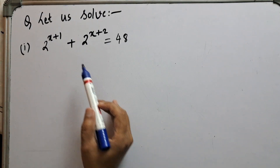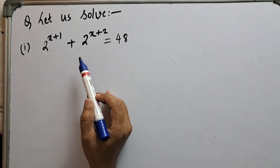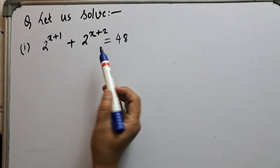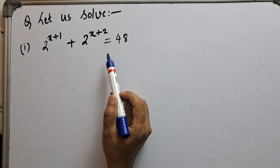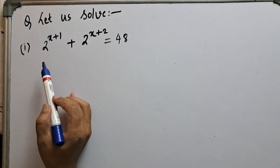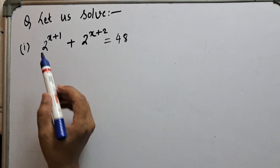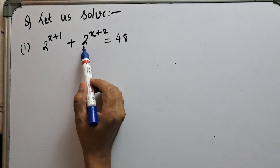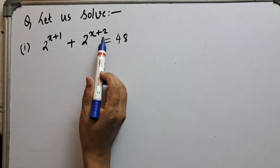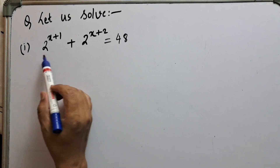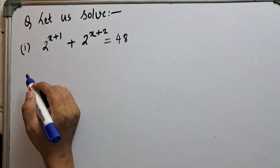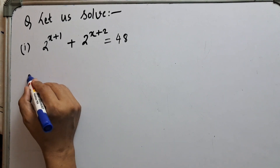Hello students, today we shall learn to solve equations based on powers. To understand this topic I have chosen three questions. This is the first question among those three. So let's solve this question: we have the equation 2 to the power x+1 plus 2 to the power x+2 equal to 48.